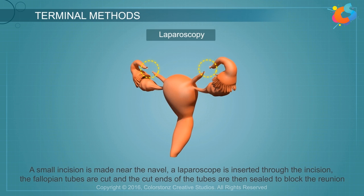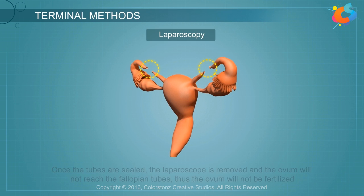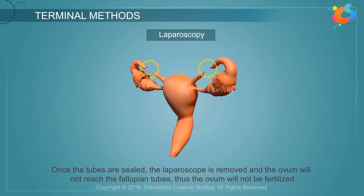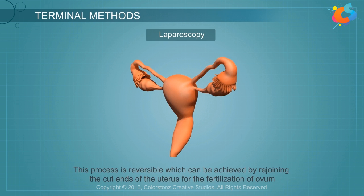Once the tubes are sealed, the laparoscope is removed and the ovum will not reach the fallopian tubes, thus the ovum will not be fertilized. This process is reversible, which can be achieved by rejoining the cut ends for the fertilization of ovum.